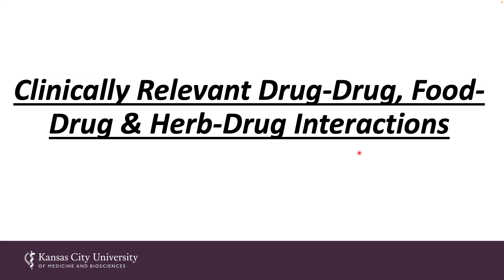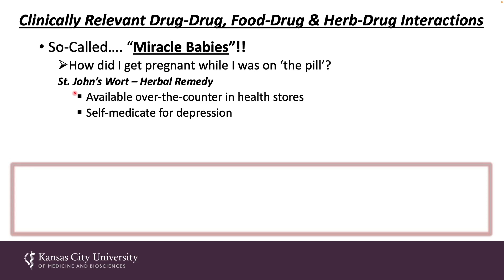In order to understand the genetics of GI disorders, you need to have a clear understanding of biotransformation pathways in the liver and intestine. I'd like to start this lecture with a discussion of clinically relevant drug-drug, food-drug, and herb-drug interactions. The question being asked is: how did I get pregnant while I was on the pill? Many folks self-medicate with herbal remedies, including one called St. John's wort, available over-the-counter at health stores. Folks self-medicate for depression, among other things.